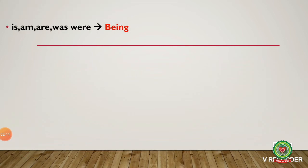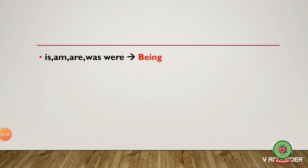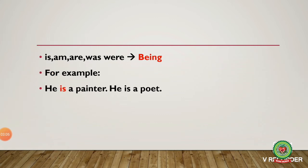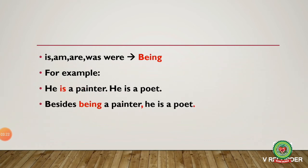Other than that, there is another case in which the main verbs are is, am, are, was, or were. In these situations, they are replaced by 'being.' For example: 'He is a painter. He is a poet.' Subjects are the same, so we use 'he' once only. The verb 'is' changes to 'being.' The answer is: 'Besides being a painter, he is a poet.'